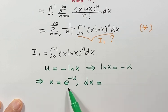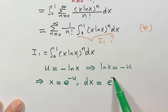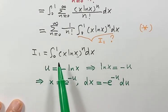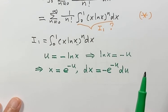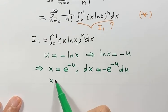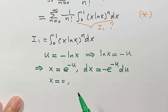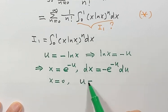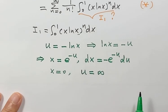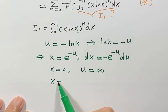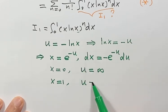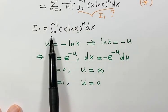Then we need dx: taking the derivative gives dx equals negative e to the power negative u du. For the bounds: when x is 0, u is positive infinity; when x is 1, u is 0. So now let's put the substitution back into I1.